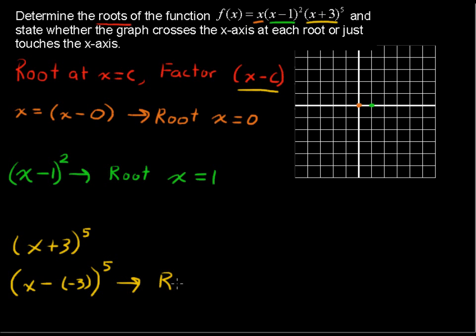So we can say that there is a root at x equals negative 3. So I'll put a dot there as well, along the x-axis where x equals negative 3. Now let's look at whether or not it crosses the x-axis or just touches the x-axis.